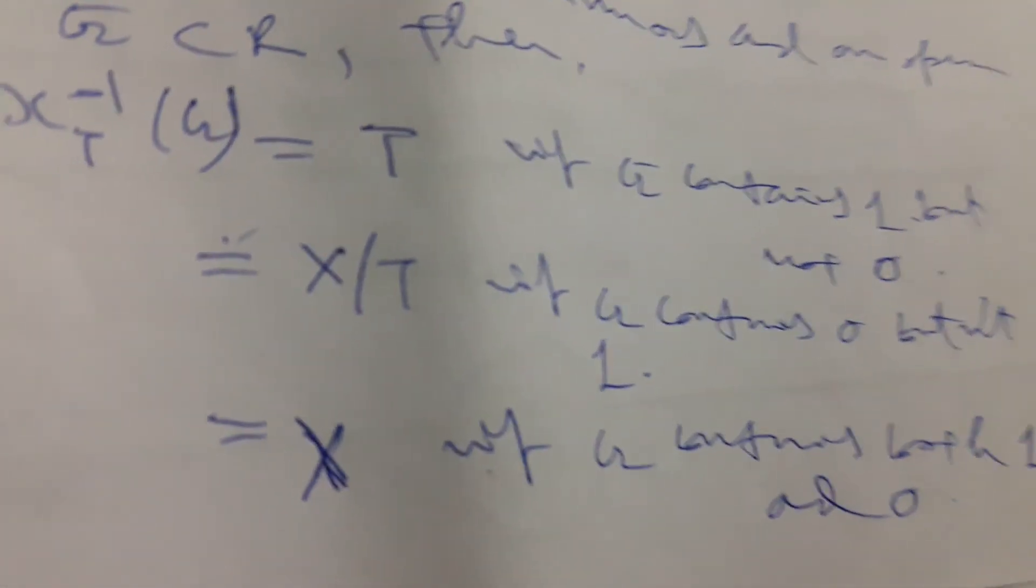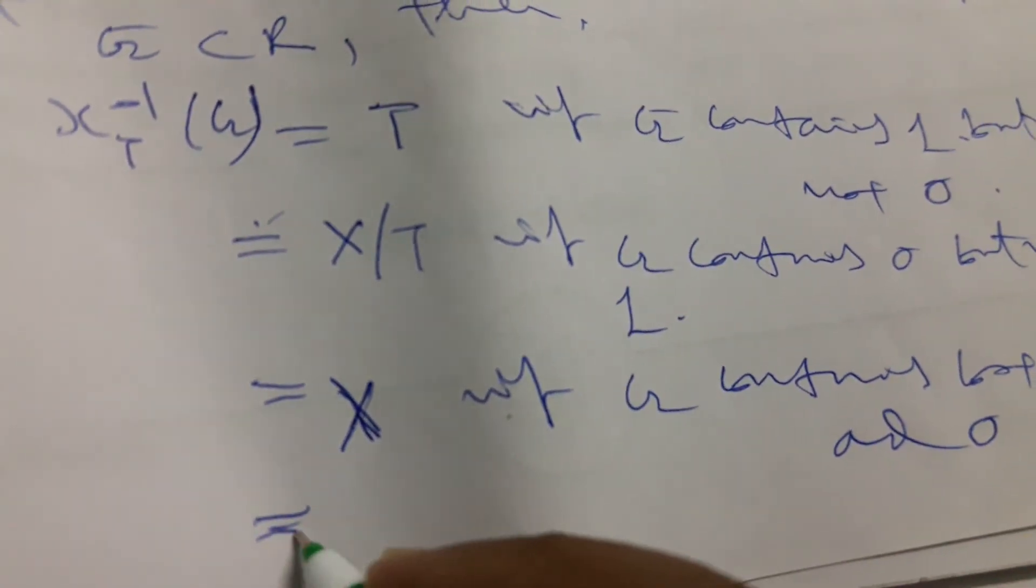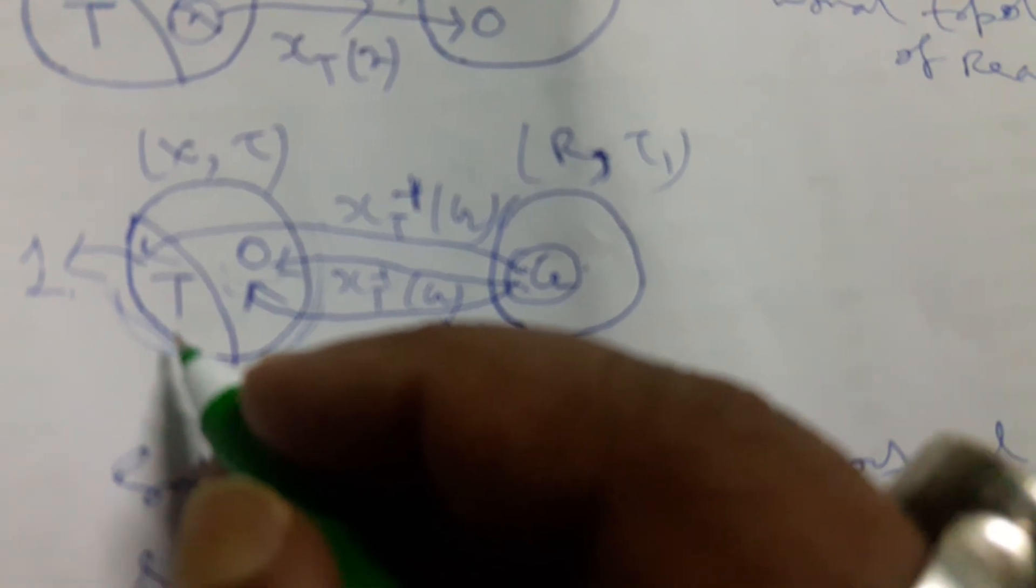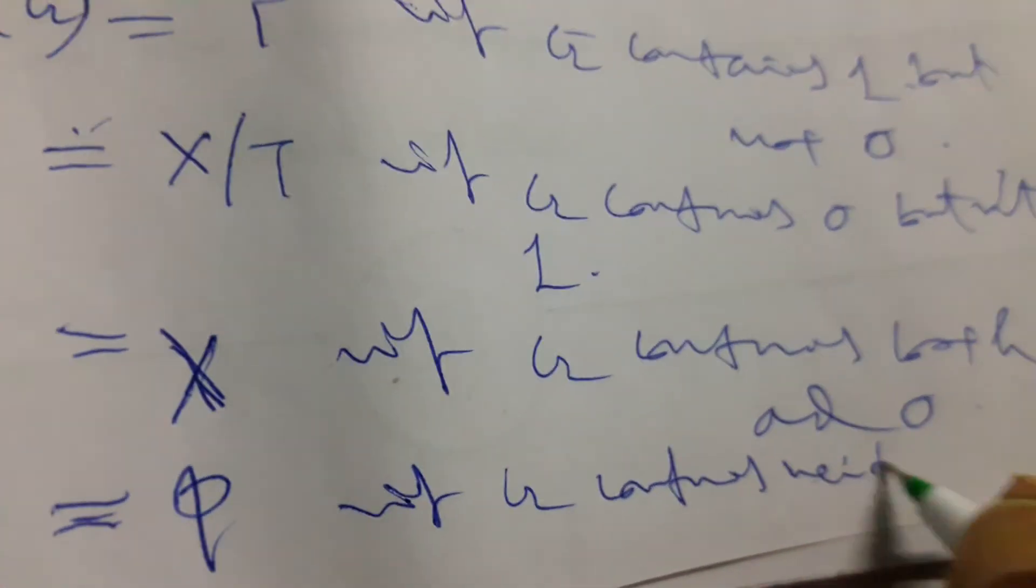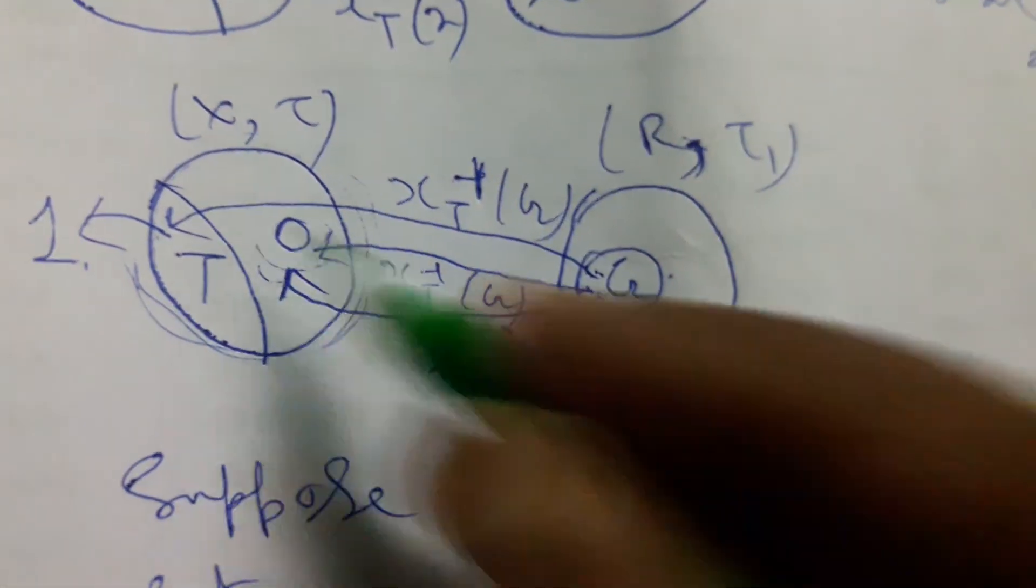And also we find the empty set, that is φ, because G contains neither 0 nor 1. If G contains neither 1 nor 0, the result will be φ, the empty set.